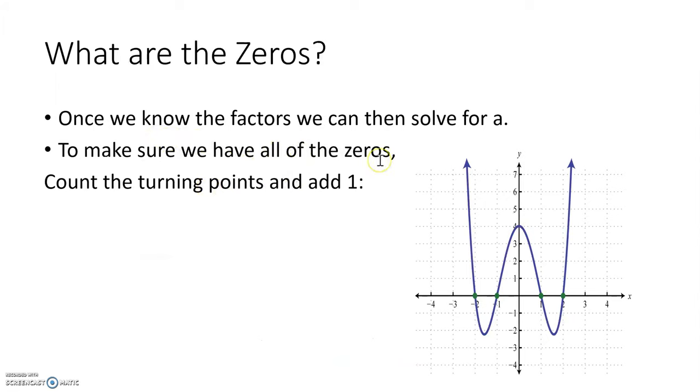Once we have the factors, we can solve for A to make sure that we have all of the zeros. So let's count the turning points – 1, 2, 3, and add 1. So we know that this is fourth degree polynomial, so we should have four zeros.